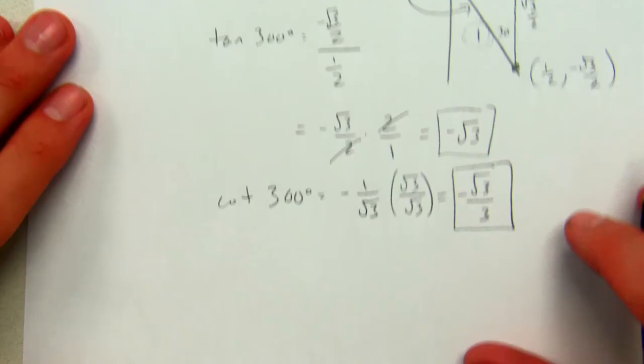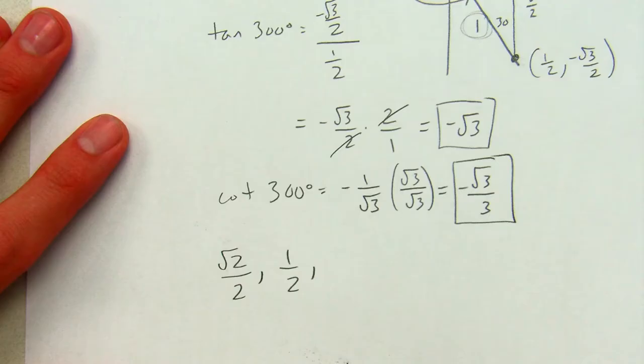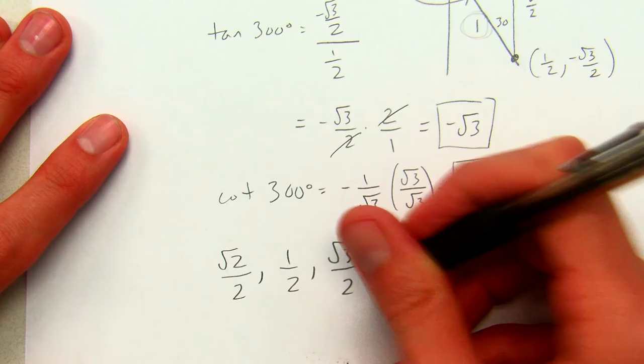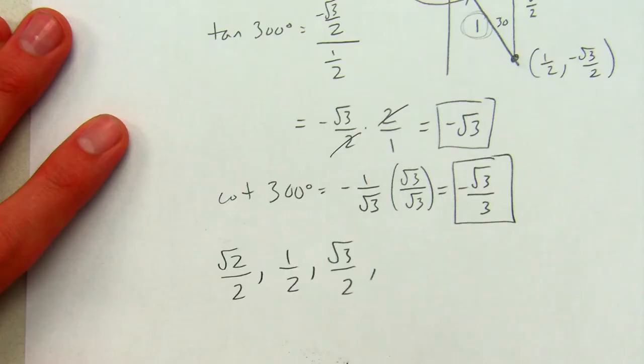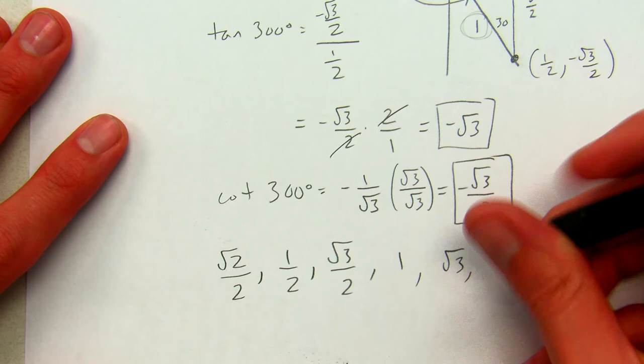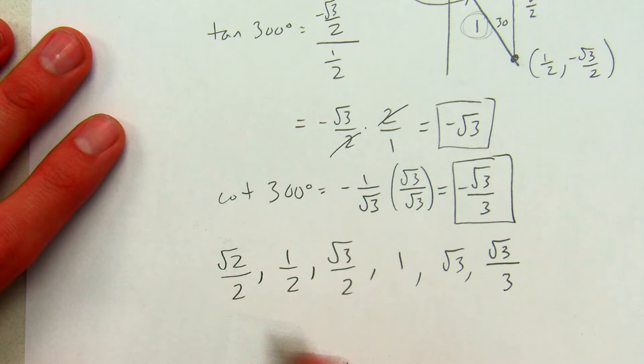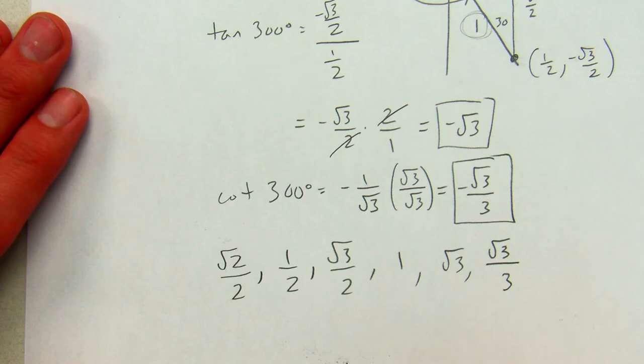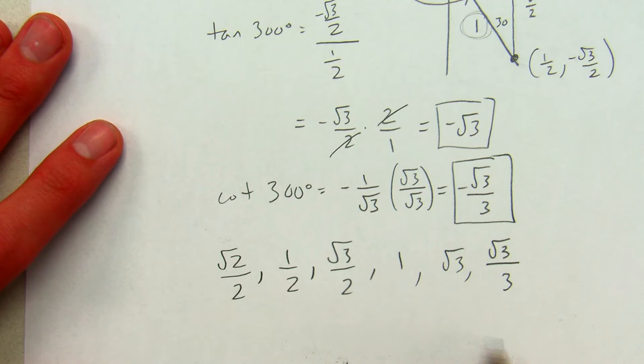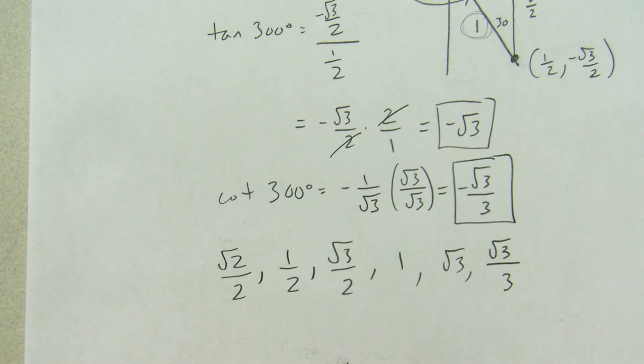Let's list the numbers we've seen so far. For sine and cosine, we see ±√2/2, ±1/2, and ±√3/2. For tangent, we see 1, √3, and √3/3 — with appropriate signs. These are the numbers that appear when dealing with 30-60-90 or 45-45-90 right triangles. It's important to recognize these numbers, because when we do inverse trig functions, we'll see them as inputs and have to figure out what angles they go with.